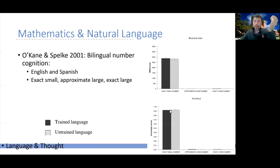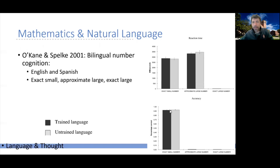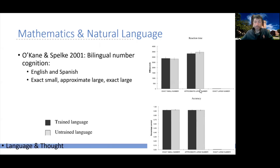What about approximate large numbers? Same result. Language shouldn't really affect your ability to think about approximate large numerosities, because you have the analog representation module — the number sense — for that. And indeed, participants were equally fast in responding, regardless of whether they responded in the language they were trained in or in the other language. The numerical difference is not statistically significant.